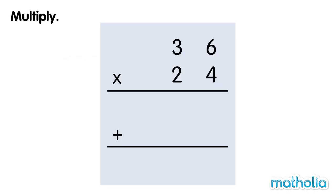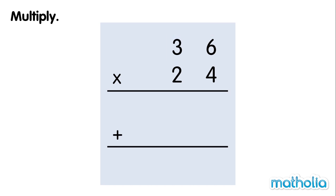Let's multiply 36 and 24. We start by multiplying 36 by 4. Start with the 1s. 4 times 6 ones equals 24 ones. Regroup 24 ones into 2 tens and 4 ones.